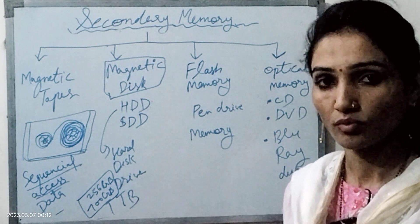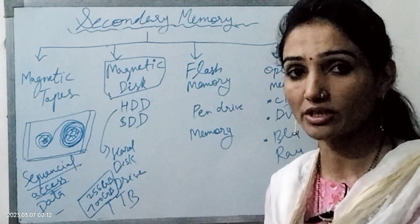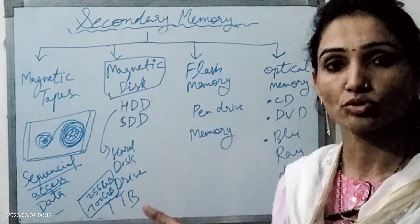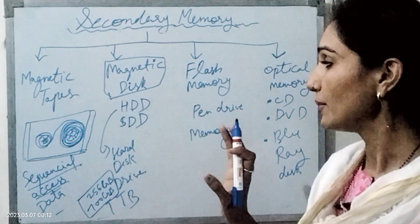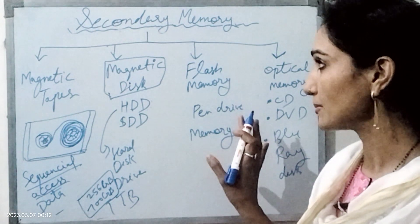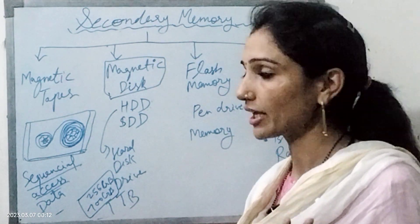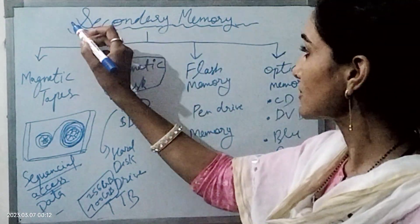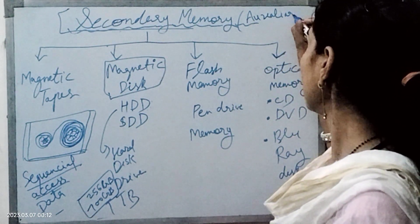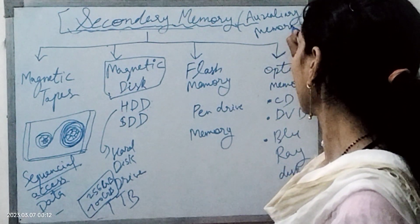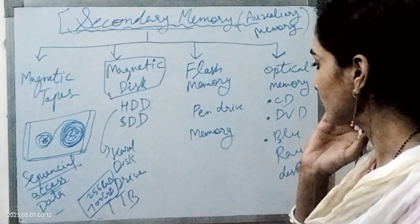We can use hard disk for backup. RAM is volatile, so we store important data on secondary storage. Secondary memory is permanent — as we read in the last video about volatile and non-volatile memory. Secondary memory is also known as auxiliary memory.